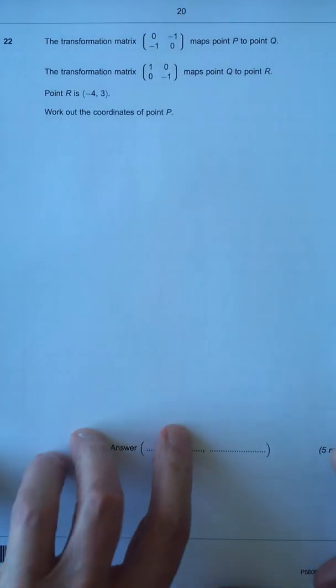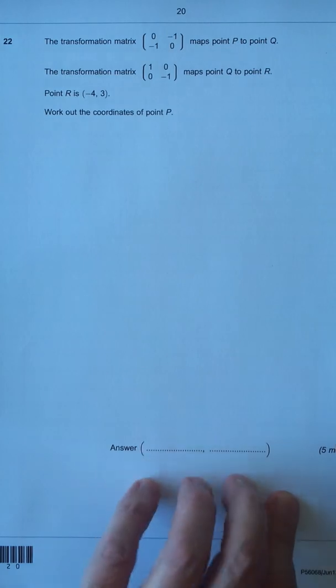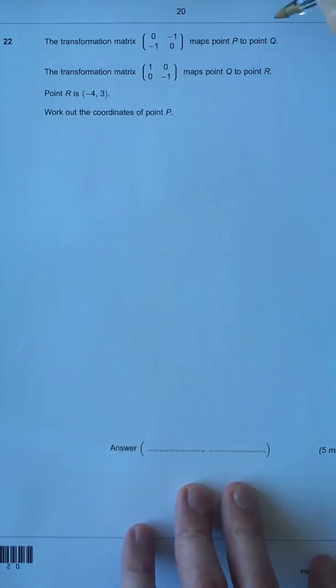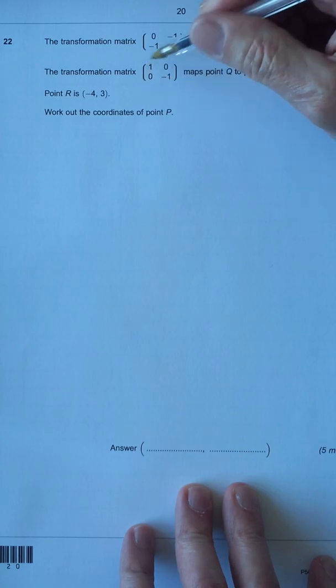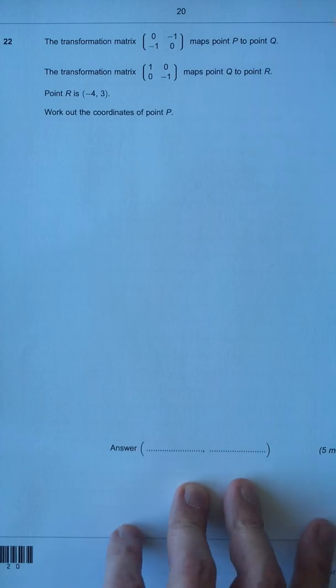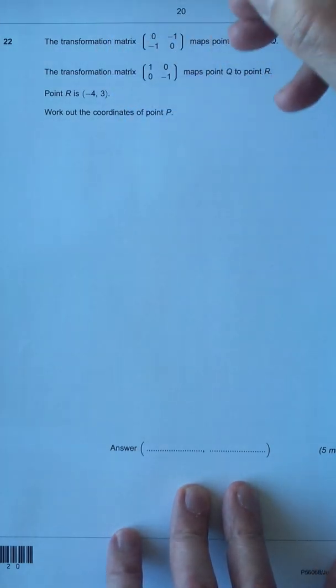Okay, question 22 is about matrices. We have this transformation matrix here which maps P onto Q. Then this transformation matrix which maps Q onto R. And we're given point R. So let's write down what this means.